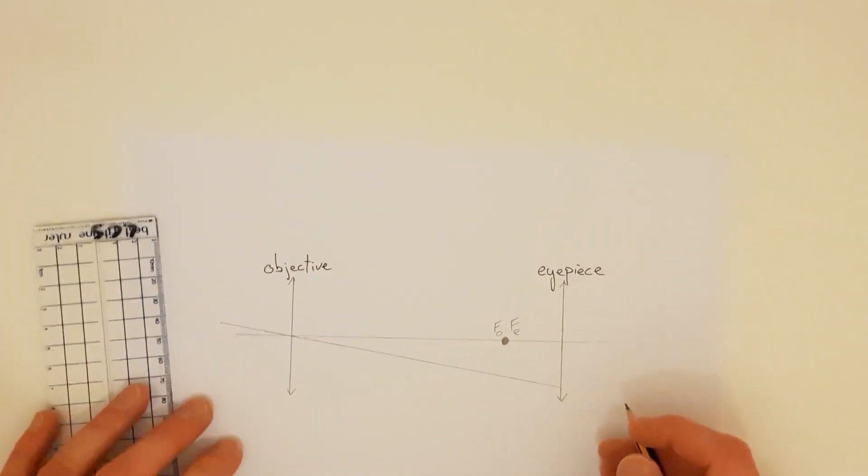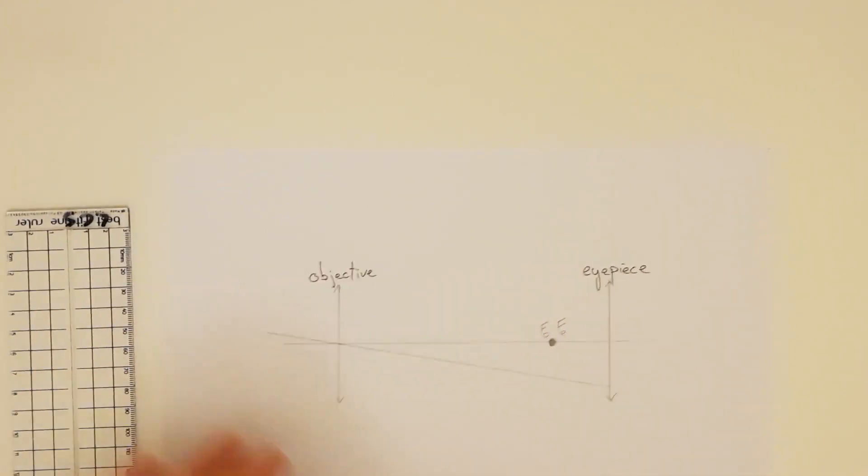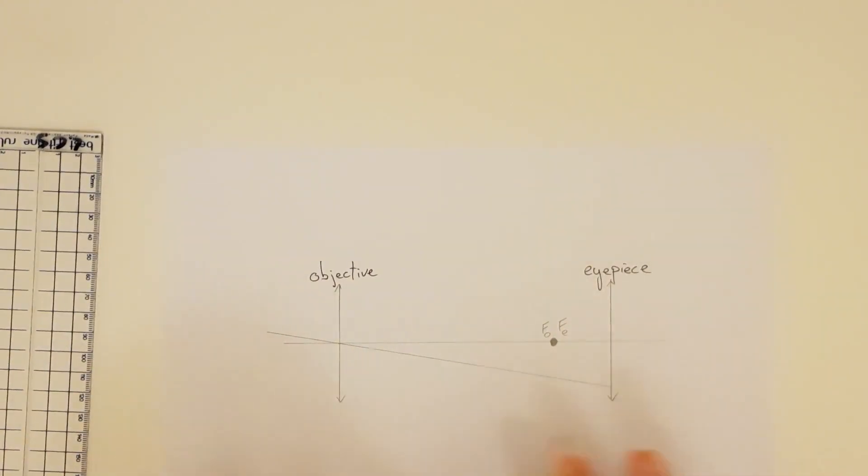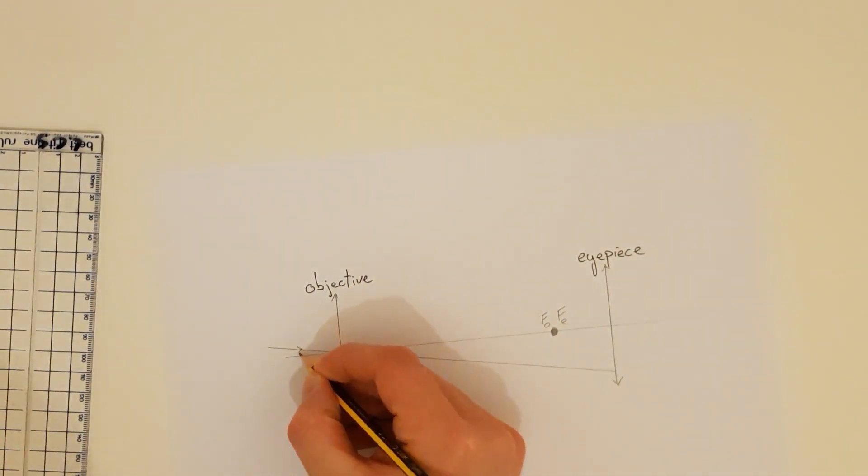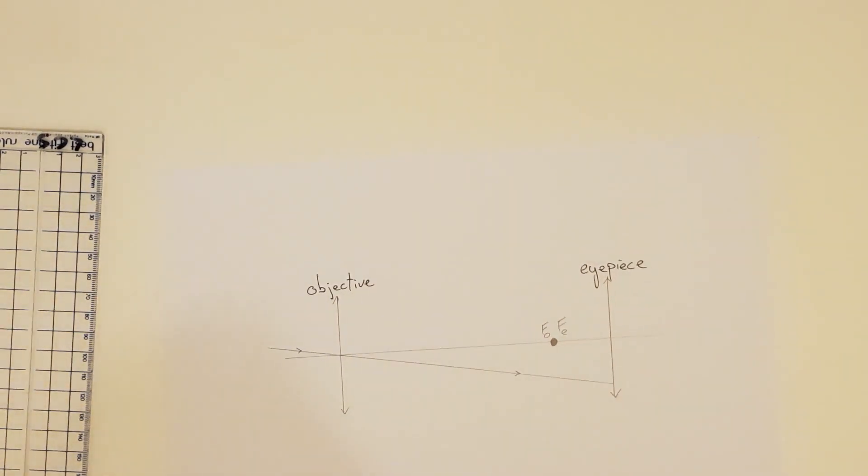A lot of students lose marks on this question because they have the ray here refracting through this objective lens and changing direction. This is one of our standard rays so it continues in a completely straight undeviated line. I'm just going to mark a couple of arrows on there just to show those moving in that direction.